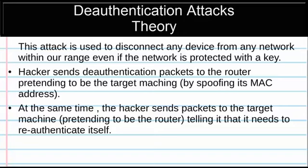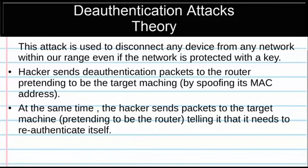At the same time, we're going to spoof our MAC address to the access point's MAC address and tell the target client that it needs to re-authenticate itself. So we pretend to be the target client and tell the access point we want to disconnect, then pretend to be the access point and tell the client it needs to reconnect and re-authenticate.